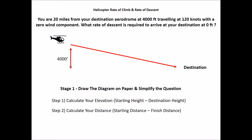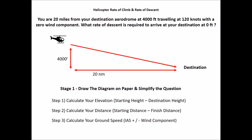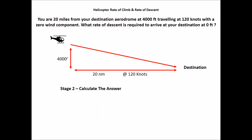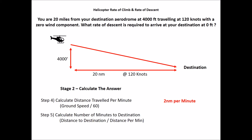Step two, calculate your distance: starting distance minus finished distance — we're 20 miles out flying straight to our destination, so 20 miles to run. Step three, calculate your ground speed: indicated airspeed plus or minus wind component — 120 knots with zero wind component gives us 120 knots ground speed. Step four, calculate distance travelled per minute: ground speed divided by 60 — 120 divided by 60 gives us 2 nautical miles per minute. Step five, calculate the number of minutes to destination: 20 miles divided by 2 nautical miles per minute gives us 10 minutes.